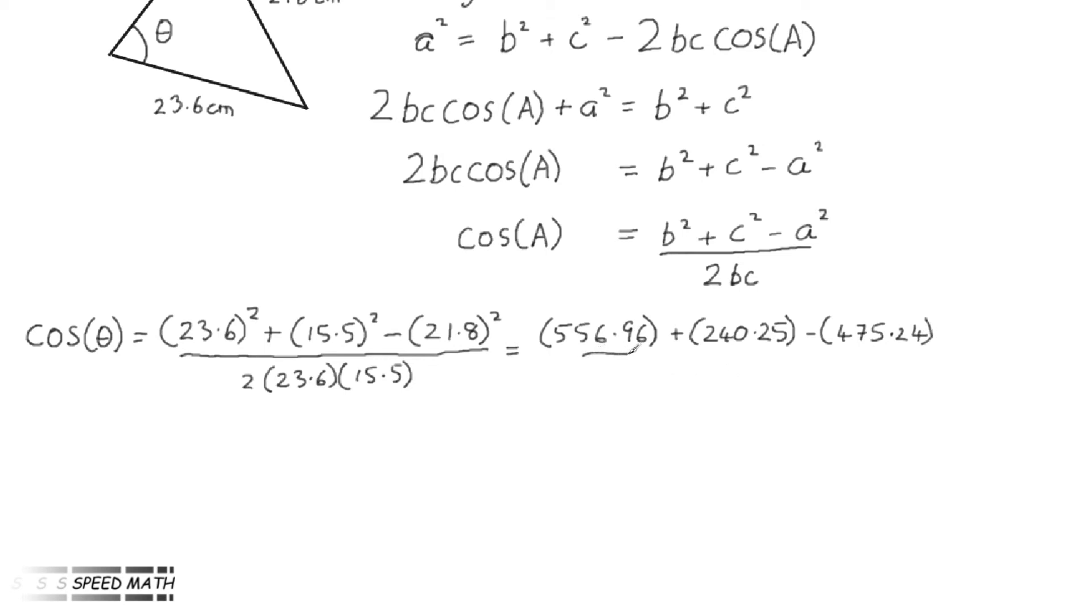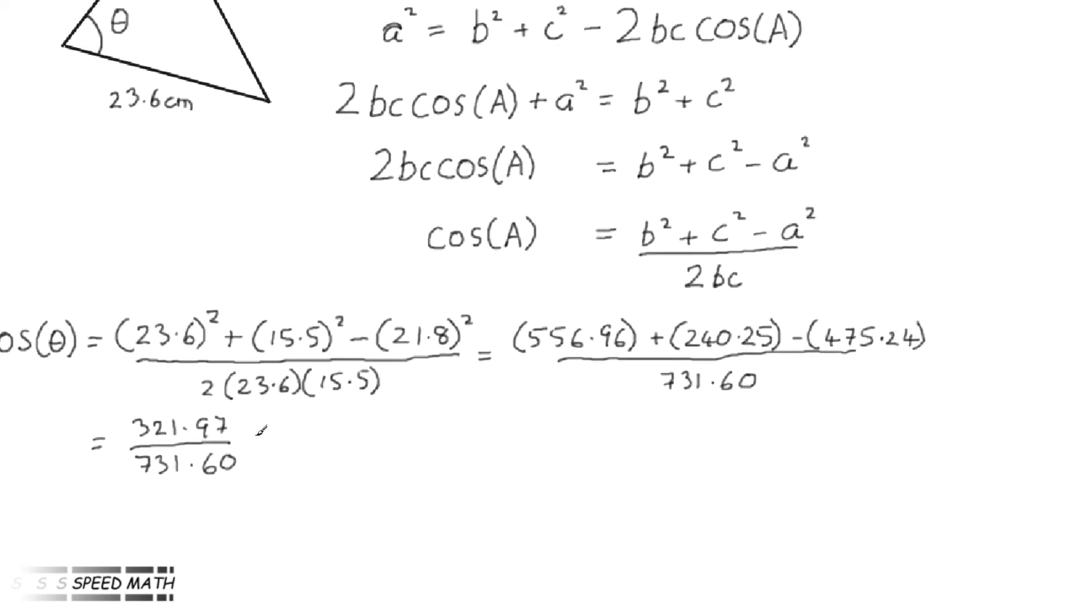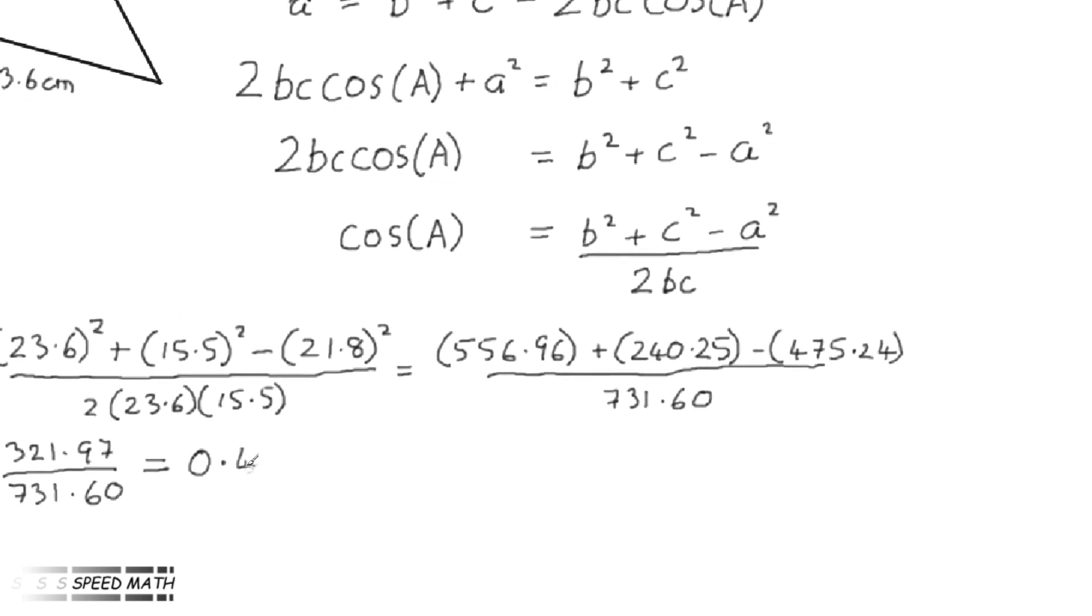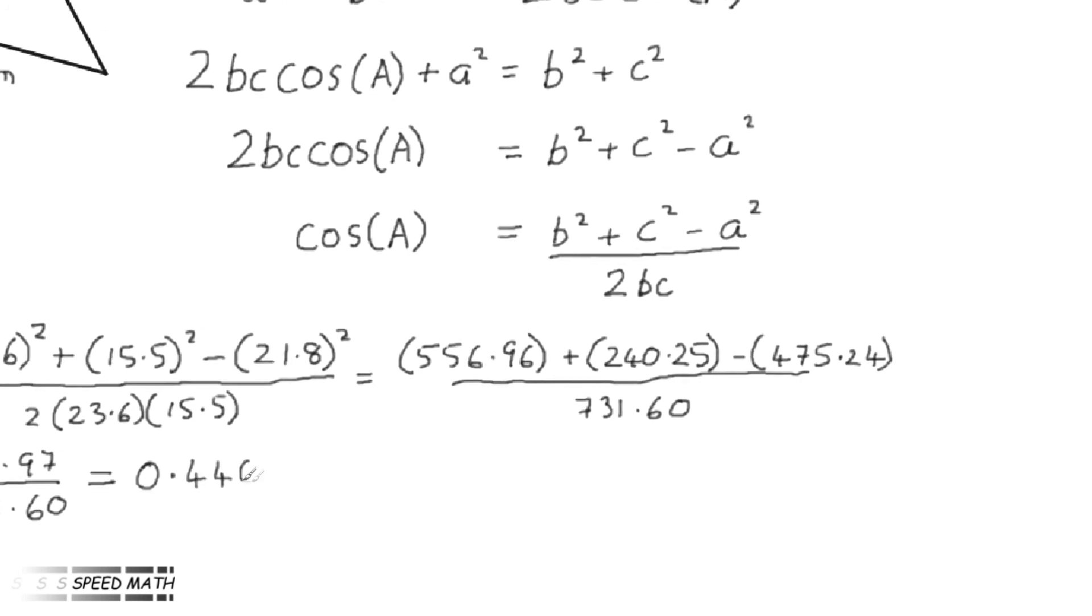Into the home straight now, this all equals 321.97 divided by 731.60, which equals 0.4401.